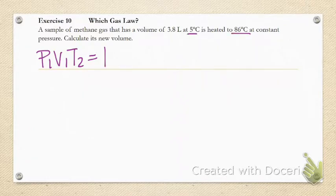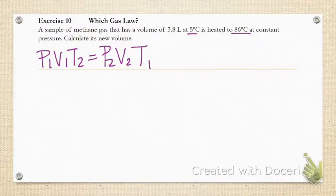Now I'm going to use this form which by the way is Charles's law. The 5 degrees celsius is 278K and the 86 is 359K. Now I'm going to solve for V2 and plug that in.